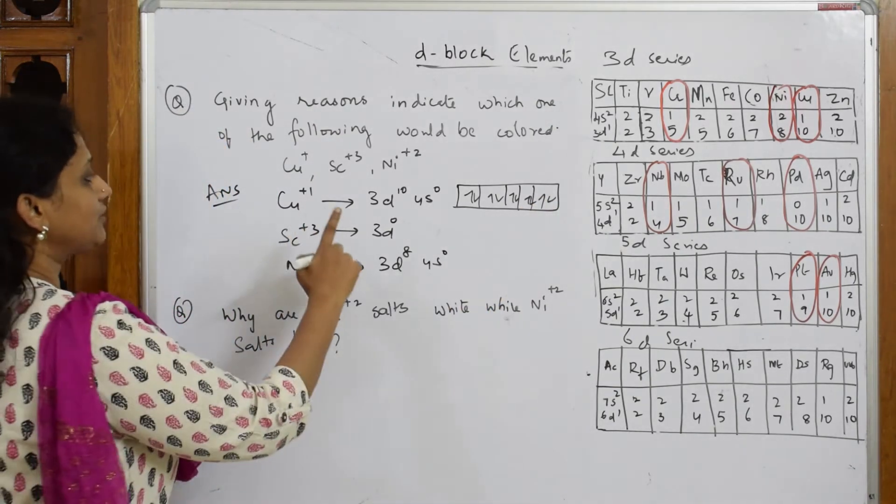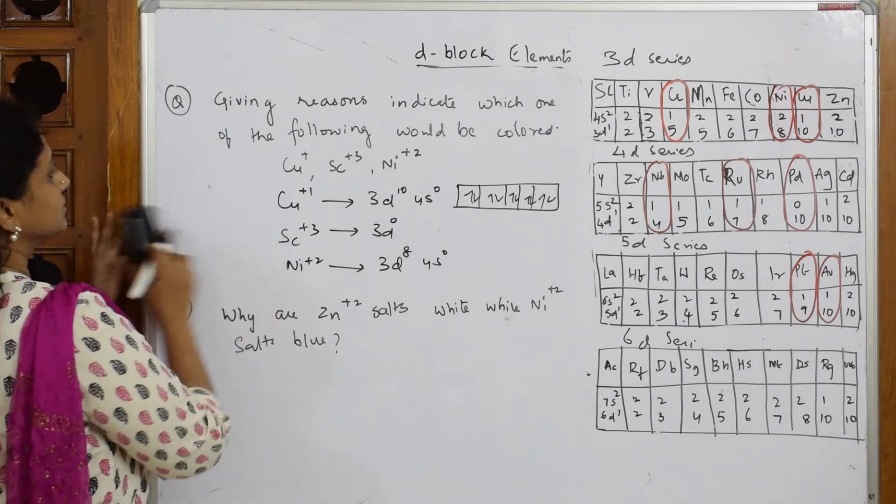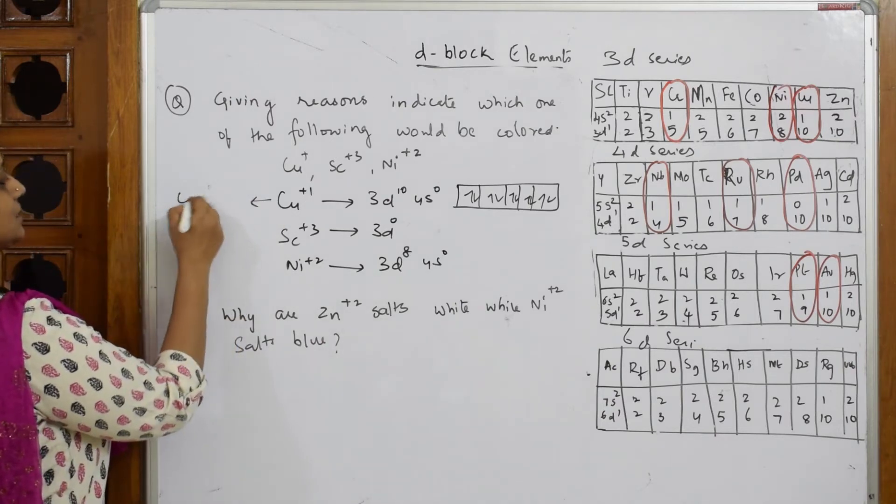I said unpaired electrons, then only colored. So fully filled, this is colorless. Let us write: this is colorless.